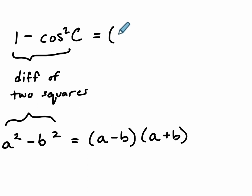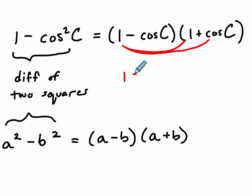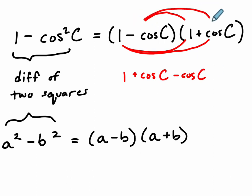Let's just make sure we're convinced that it factors this way: one times one is one; one times cosine of c is cosine of c; negative cosine of c times one is negative cosine of c; and negative cosine of c times cosine of c is negative cosine squared of c. Those two middle terms cancel, and what's left is one minus cosine squared of c. So this works.